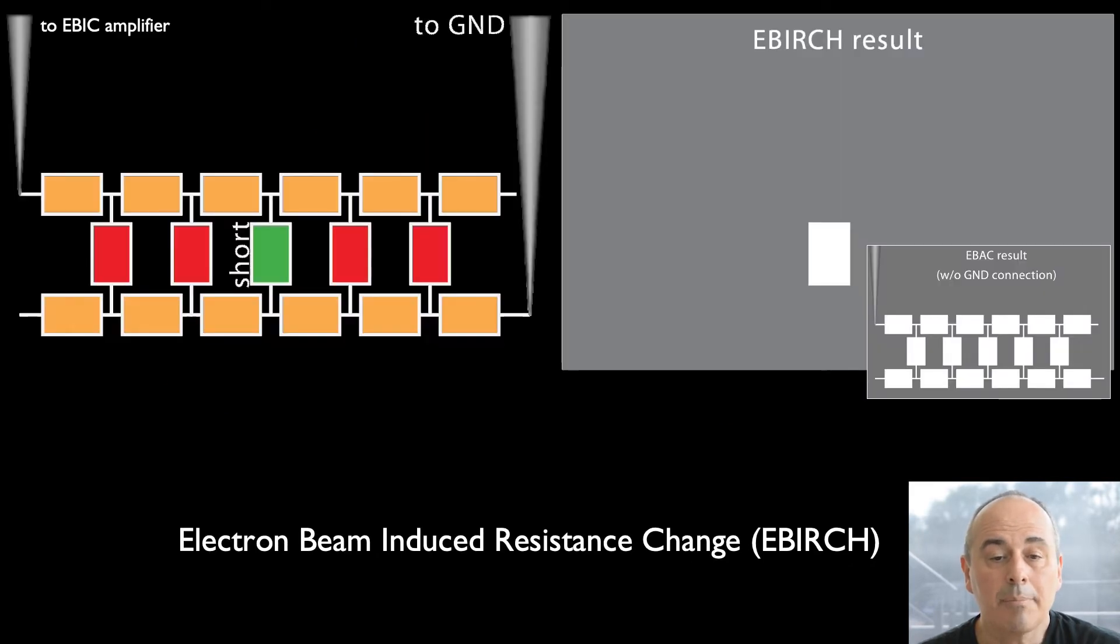While EBIC and EBAC are passive methods, Electron Beam Induced Resistance Change applies a voltage to locate a failure. The voltage is applied to force a current through the failure, which is destabilized such that the current and resistance at the failure changes when the electron beam scans the failure site. The resistance change is recorded and the respective image is superimposed on the ESE image. EBIRCH is often used to locate low-ohmic shorts in parallel structures where passive methods fail.